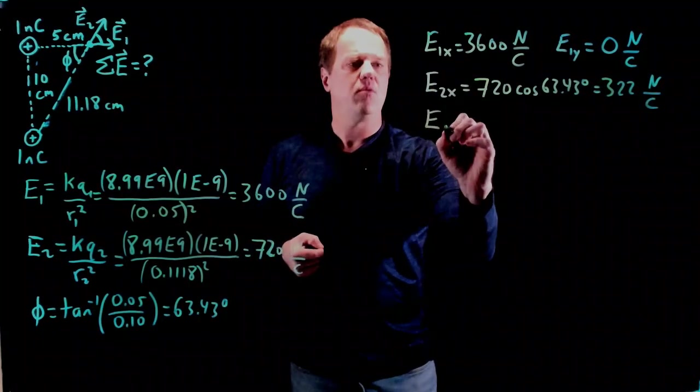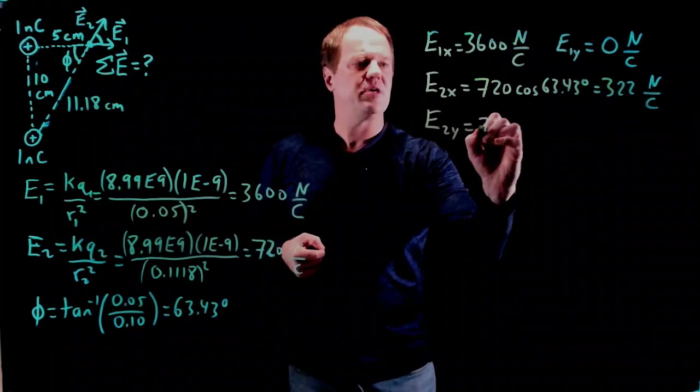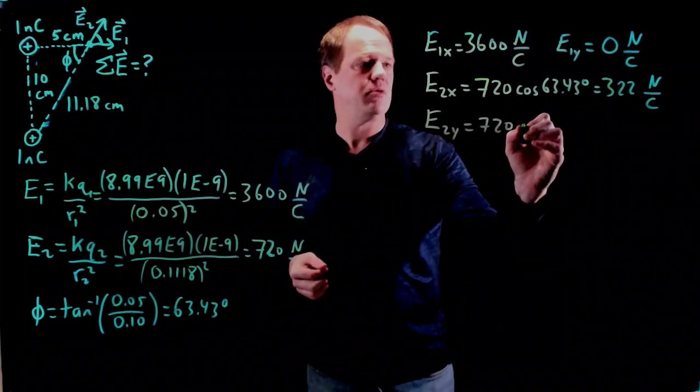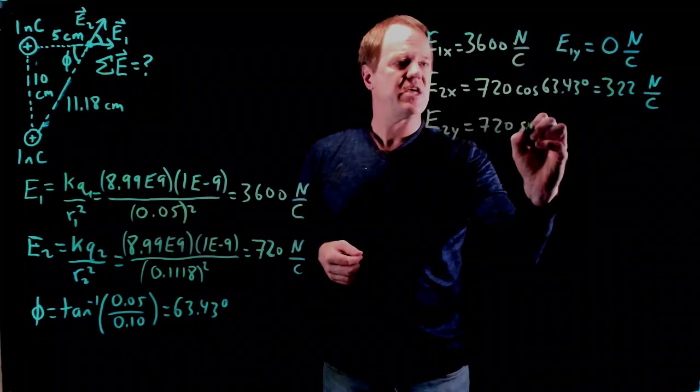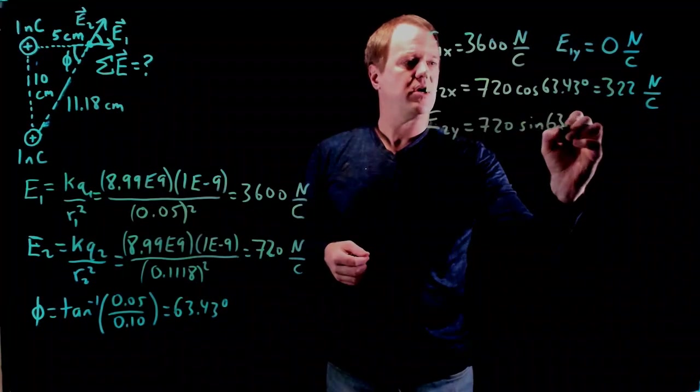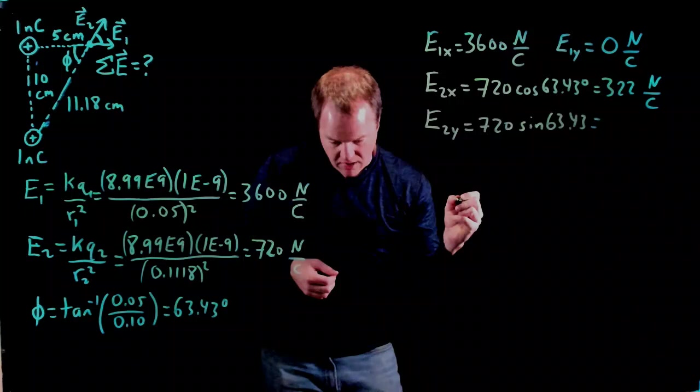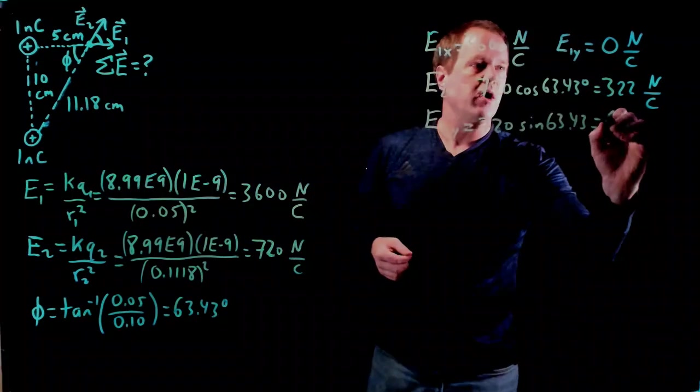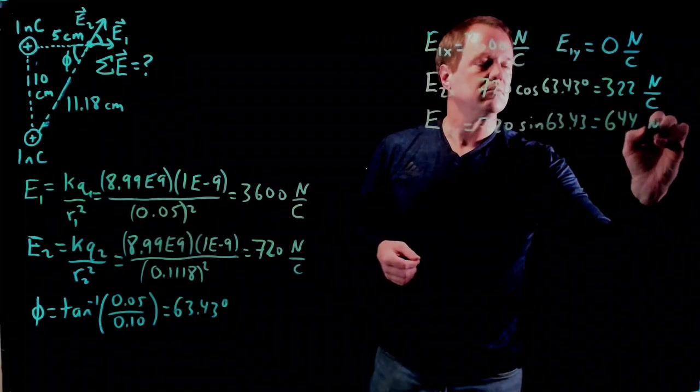And then I do the same thing with the y component, or similar thing, I should say. 720 newtons per coulomb times sine of 63.43, and I get an answer of 644.